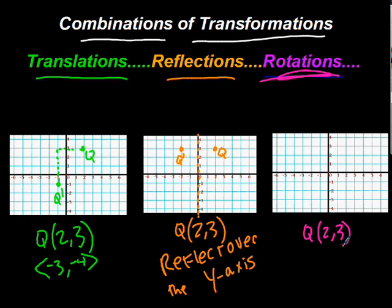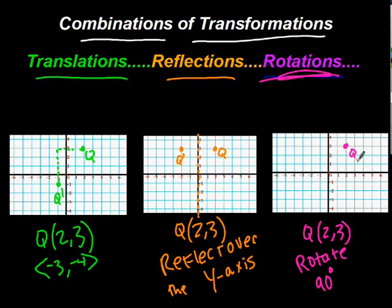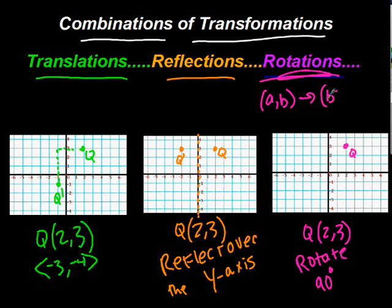The last one here is rotations. Let's take our point Q again at (2, 3) and let's rotate 90 degrees. I like 90 degrees. We have point Q at 1, 2 across and 1, 2, 3 up. If I'm going to rotate it 90 degrees, we have to remember that a 90-degree rotation is going to change any point (a, b): the a and b will switch and b becomes negative.